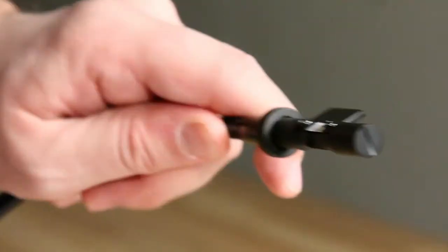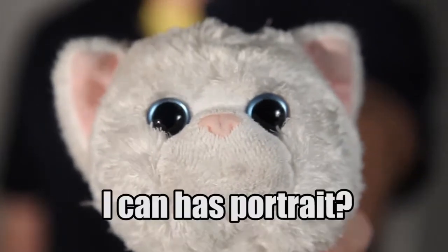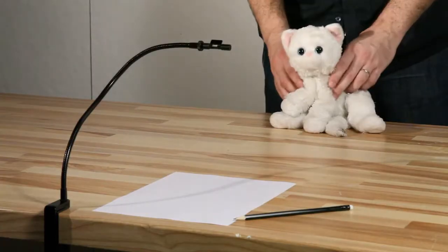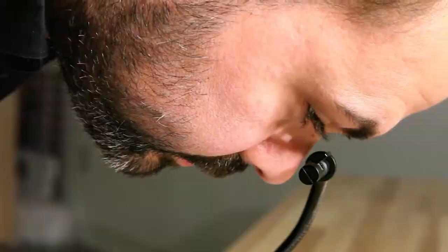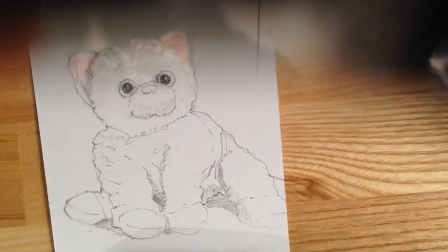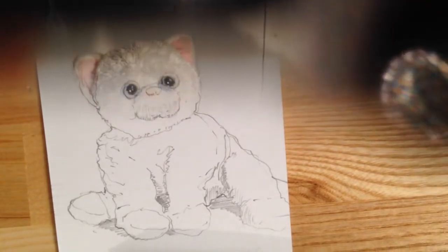So how does it work? Clamp your Neo Lucida to a table, locate the prism over your paper and in front of your subject. Look down into the prism and you will see your hand and the ghost image of your subject at the same time, and you trace what you see.